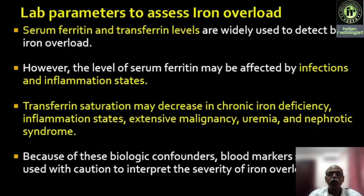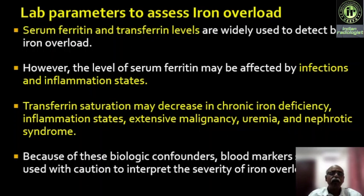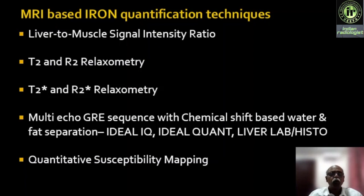Transferrin saturation is also not very reliable — it will be increased in iron overload status but can be decreased in chronic iron deficiency, inflammation, malignancy, uremia, and nephrotic syndrome. That is why biological markers like transferrin saturation and ferritin are not very useful, and that is why MRI has a great role to play in diagnosis, prognosis, quantification, and follow-up of iron overload status, especially iron homeostasis in the body.